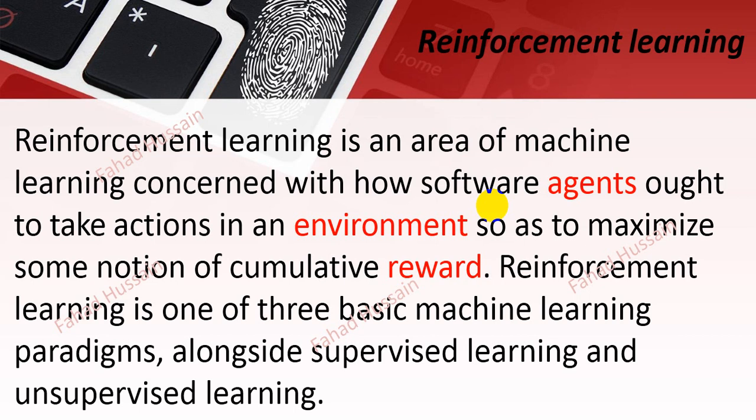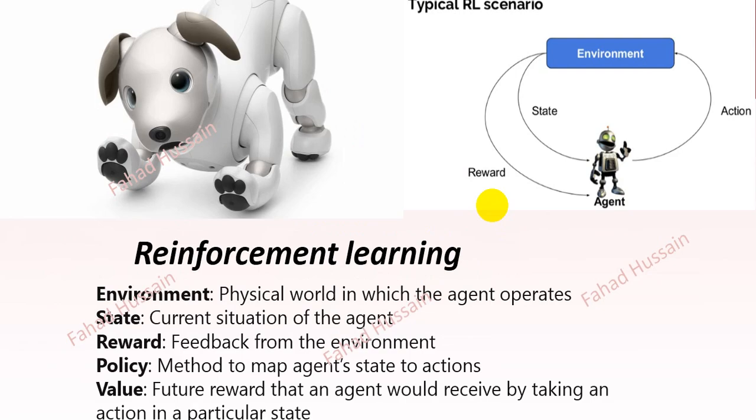Reinforcement learning is one of the three basic machine learning paradigms, alongside supervised learning and unsupervised learning. Now let's talk about the important variables: Agent, Environment, and Reward — and what are the things we can work with at an enhanced level.